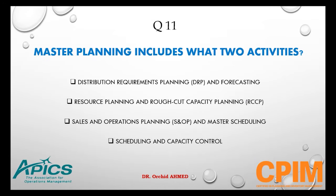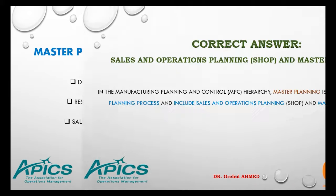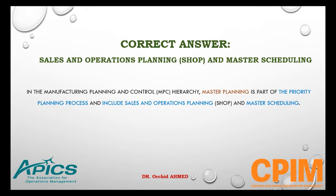Question number 11. Master planning includes what two activities? Options: DRP and forecasting; resource planning and rough-cut capacity planning; sales and operations planning and master scheduling; or scheduling and capacity control. The right answer is sales and operations planning and master scheduling. In the manufacturing planning and control hierarchy, master planning is part of the priority planning process.